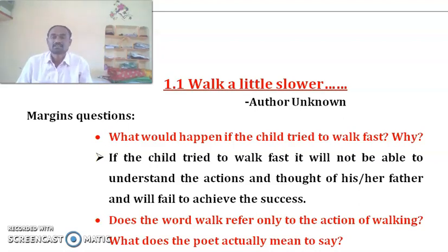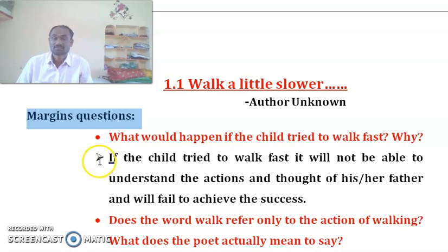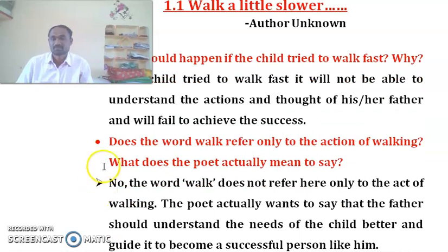So the margin questions are. Number 1: What would happen if the child tried to walk fast? Why? If the child tried to walk fast, it will not be able to understand the actions and thoughts of his father and will fail to achieve success.